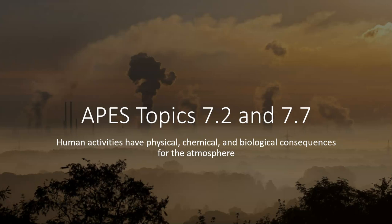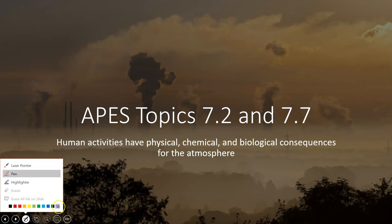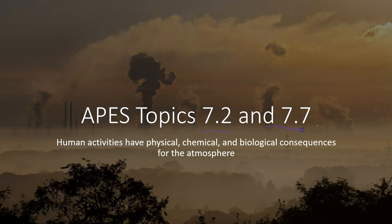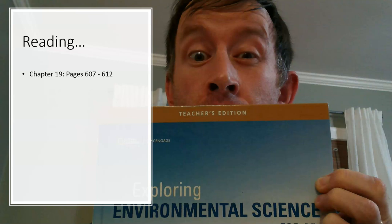Welcome. We are going to delve into new topics 7.2 and 7.7. Specifically this time we'll look at photochemical smog and acid precipitation. Our enduring understanding for unit seven is that human activities have physical, chemical, and biological consequences for the atmosphere.